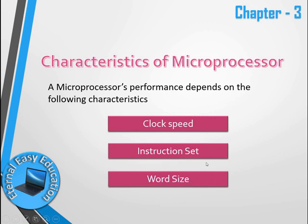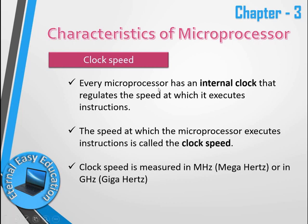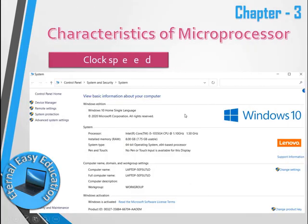The three characteristics are clock speed, instruction set, and word size. Every microprocessor has an internal clock that regulates the speed at which it executes instructions. The speed at which the microprocessor executes instructions is called clock speed, and it is measured in megahertz or gigahertz.